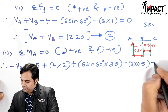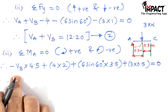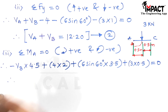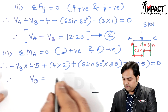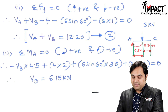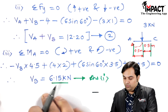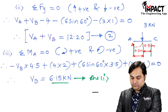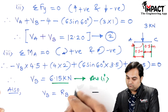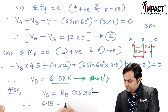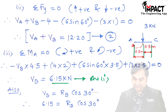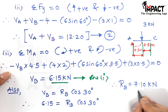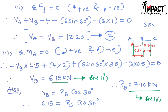Solving the moment equation, VB comes out to be 6.15 kN — that is the first reaction calculated. Since VB = RB cos30, we get RB = 6.15 / cos30 = 7.10 kN. That is the second answer.